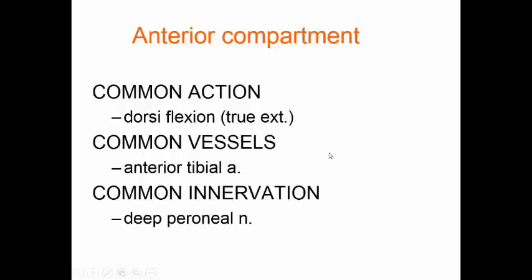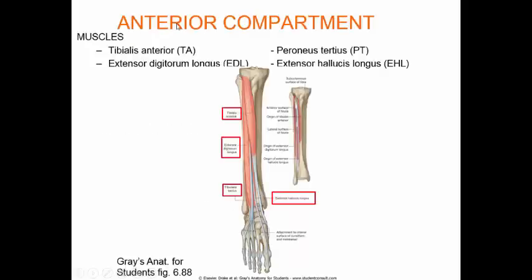The anterior compartment gets its blood supply from the anterior tibial artery and is innervated by the deep peroneal nerve. The muscles in the anterior compartment...